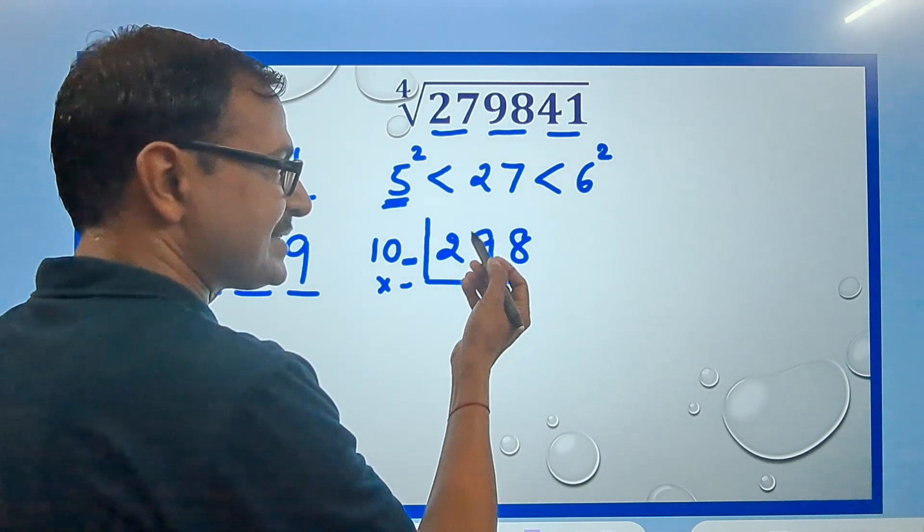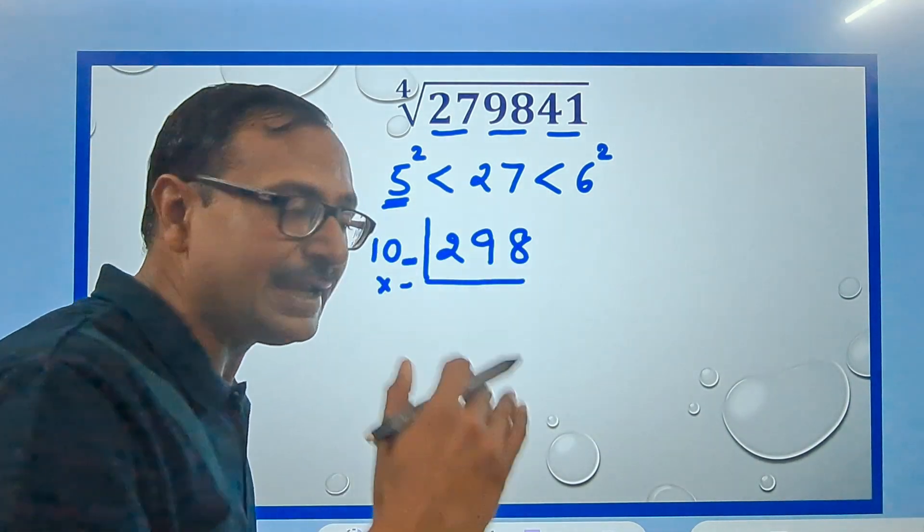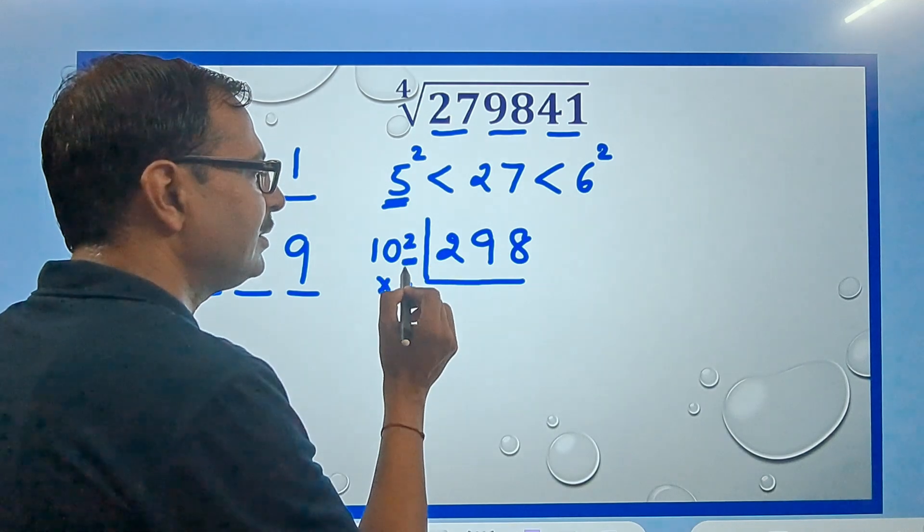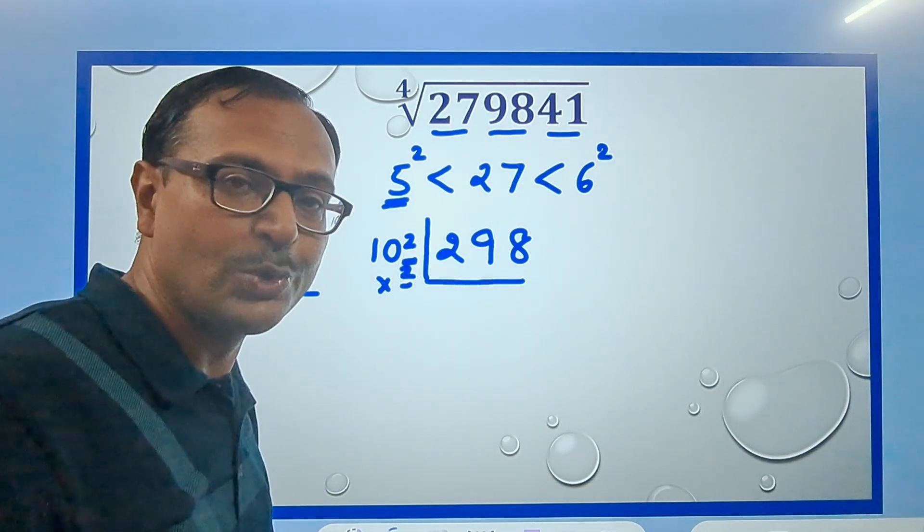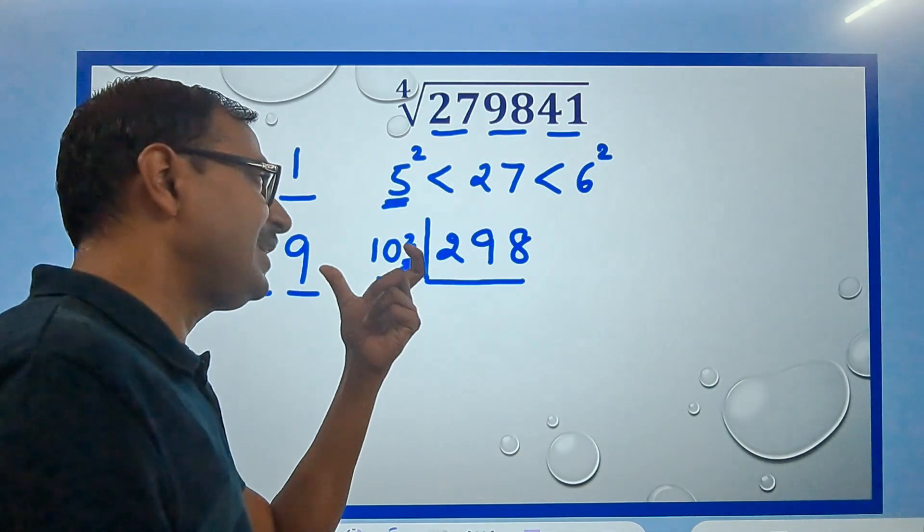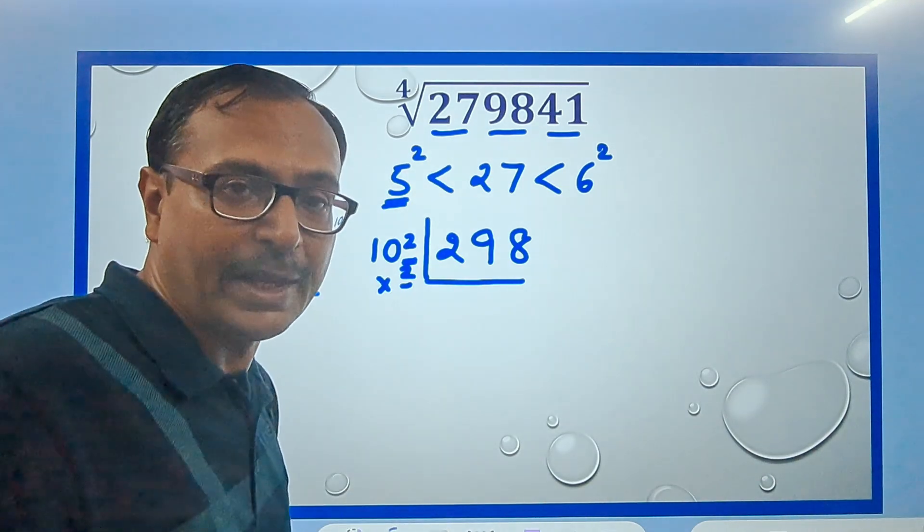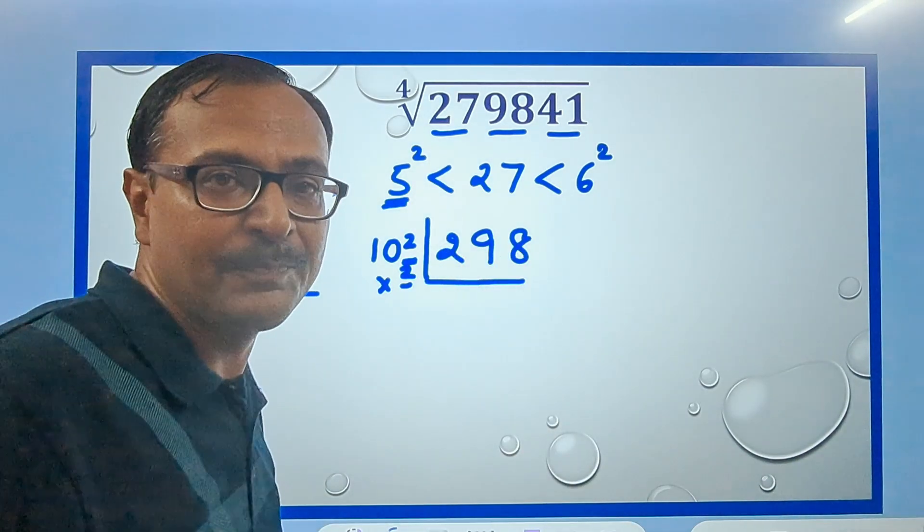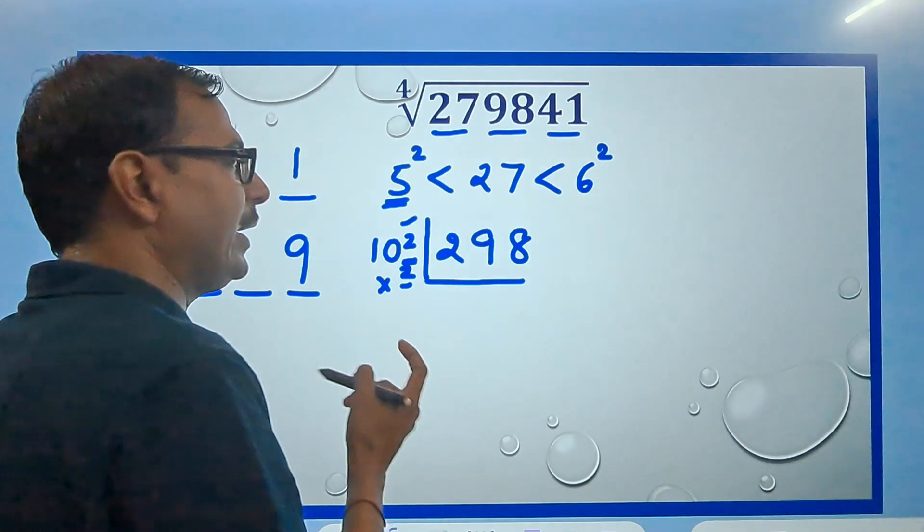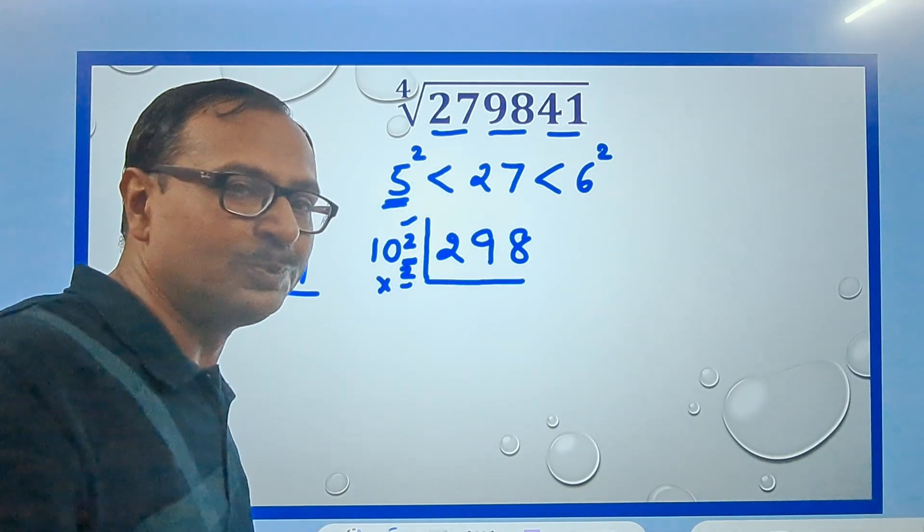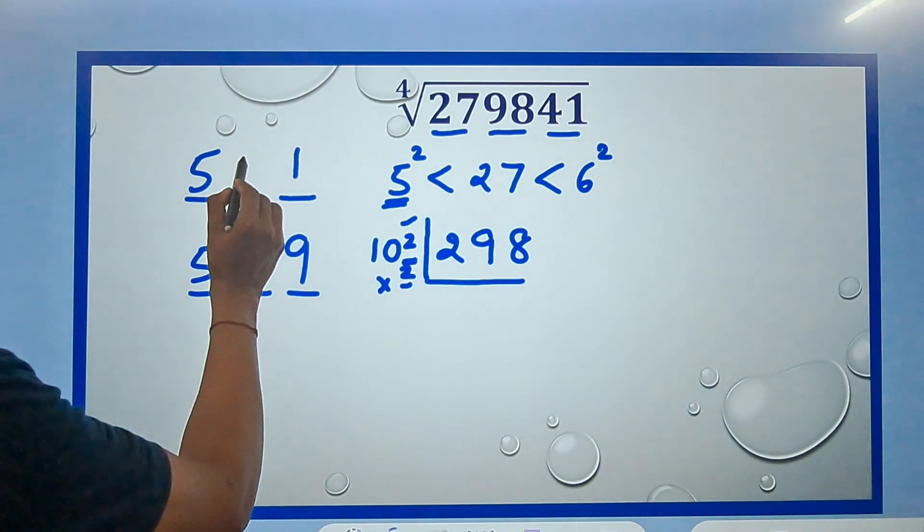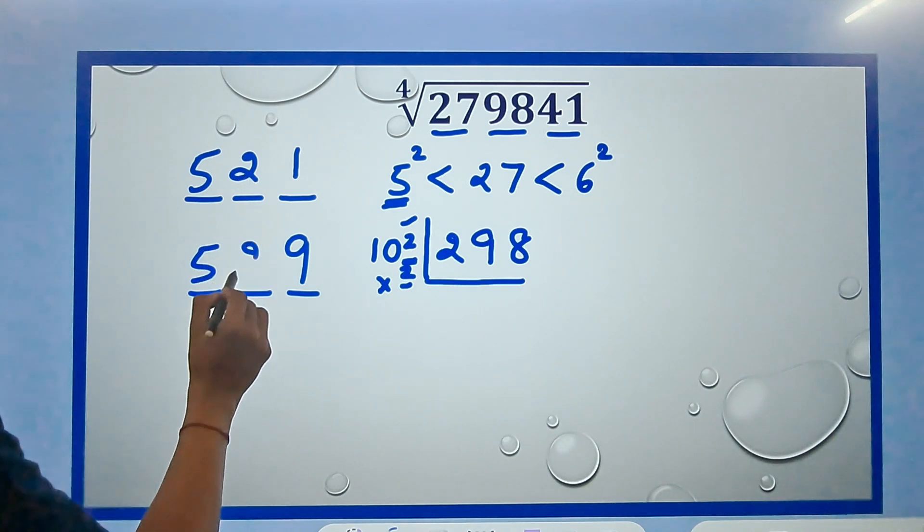I don't have to exceed 298. It has to be below 298. So it has to be 2 here. 102 times 2 is 204 but 103 times 3 is 309 that exceeds 298 and this is what I required, the number 2, and that too forms the middle digit of my answer.